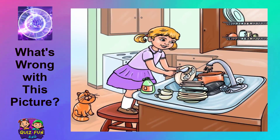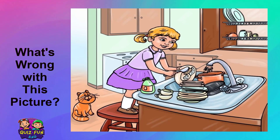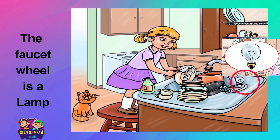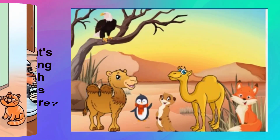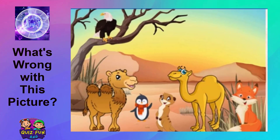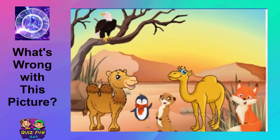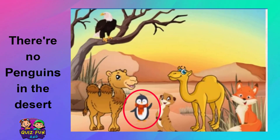What's wrong with this picture? The faucet wheel is allowed. There are no penguins in the desert.